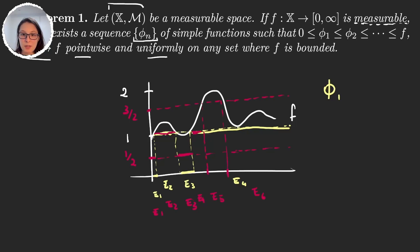And now in this region the function is greater than three over two, so it's just going to take the value three over two. And now since here is below three over two but above 1, it will take the value 1.